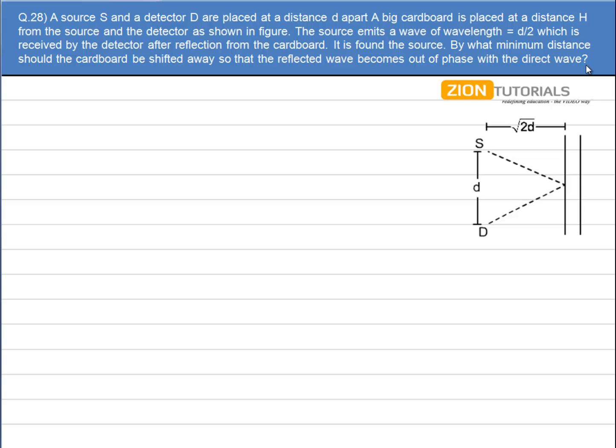It is found that the sound waves coming directly from S to D is in phase with the reflected one. So by what minimum distance should the cardboard be shifted away so that the reflected wave becomes out of phase with the direct wave?